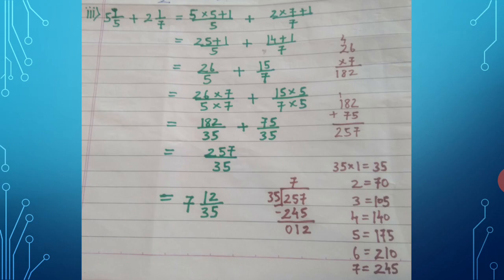Cross multiply: 26 upon 5 multiplied by 7, plus 15 upon 7 multiplied by 5. This gives 182 upon 35 plus 75 upon 35. Adding: 182 + 75 = 257 upon 35. Dividing 257 by 35: 35 × 7 = 245, remainder 12. Final answer is 7 and 12 upon 35.